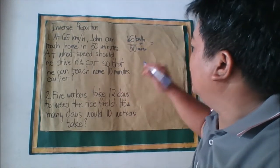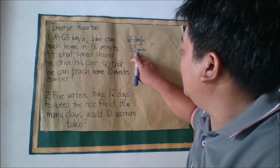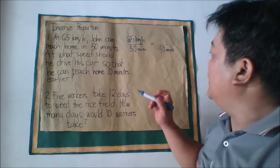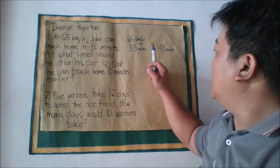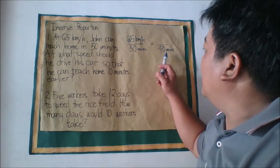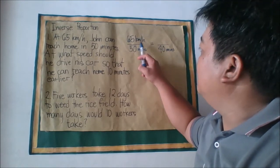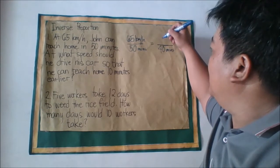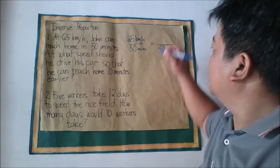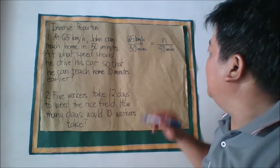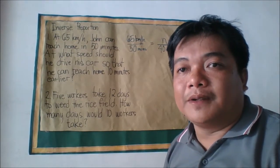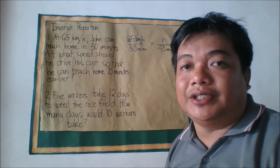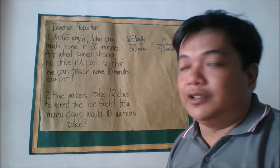He needs to arrive 10 minutes earlier than 50 minutes, so the new time is 50 minus 10 equals 40 minutes. As the time decreases, the speed must increase, so the speed n must be greater than 65. For inverse proportion, instead of cross-multiplying, we multiply the first term by the second term and set it equal to the third term multiplied by the fourth term.